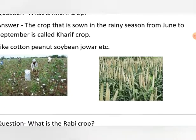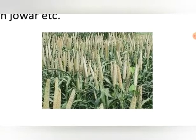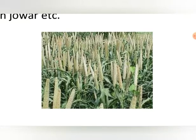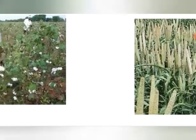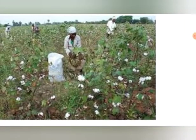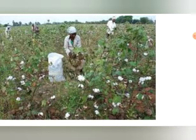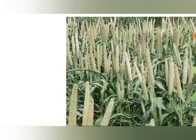Take this picture as an example. Here you can see there are many plants of millet. And here are cotton plants — a large number of cotton plants shown at one place. So this is called the crop of cotton, and this is the crop of millet.